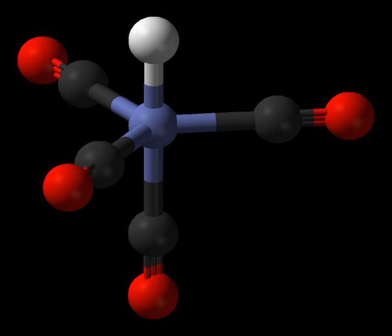In coordination chemistry, a ligand is an ion or molecule that binds to a central metal atom to form a coordination complex. The bonding with the metal generally involves formal donation of one or more of the ligand's electron pairs. The nature of metal-ligand bonding can range from covalent to ionic.